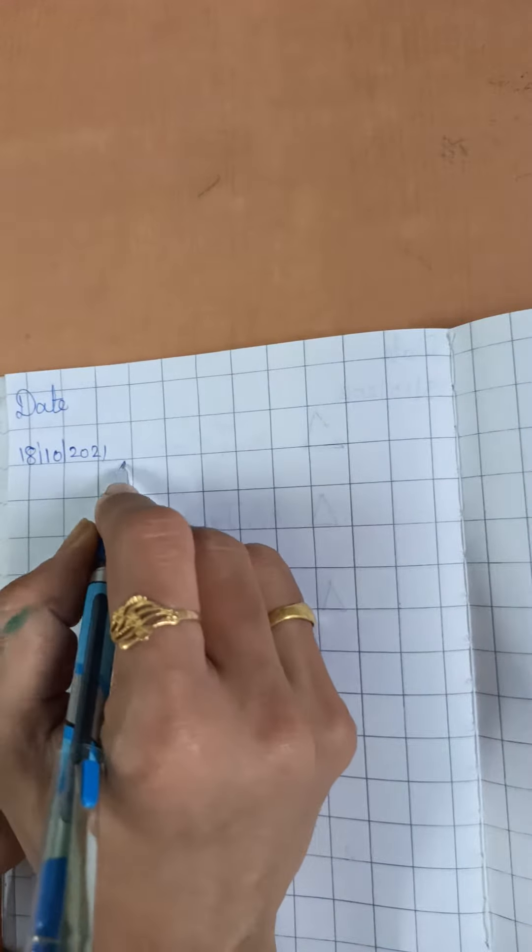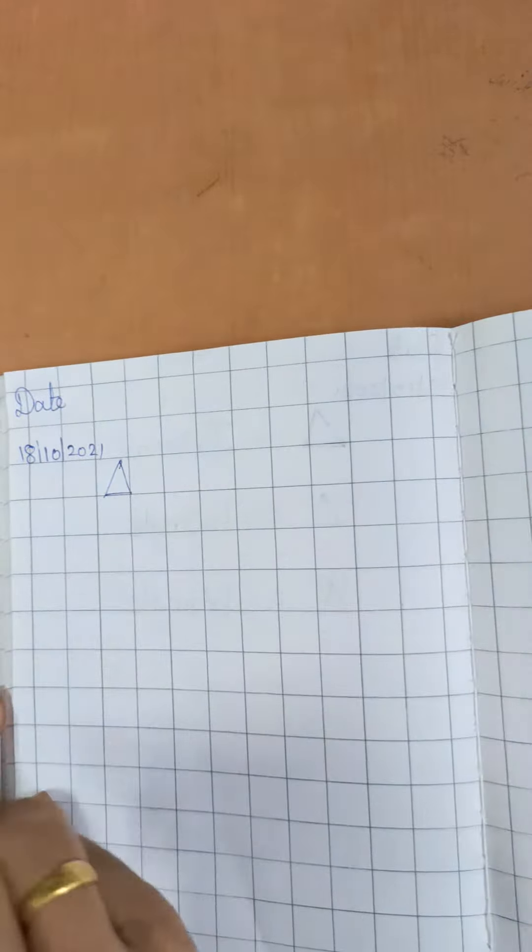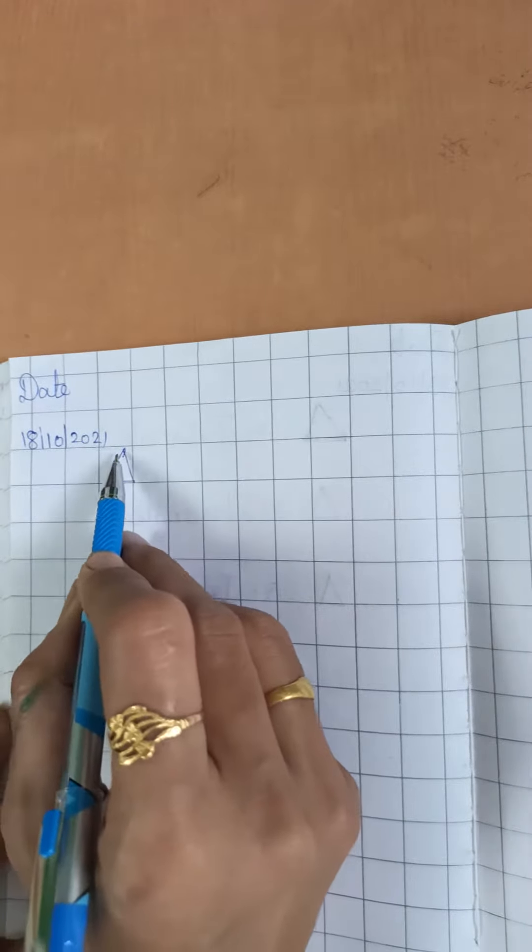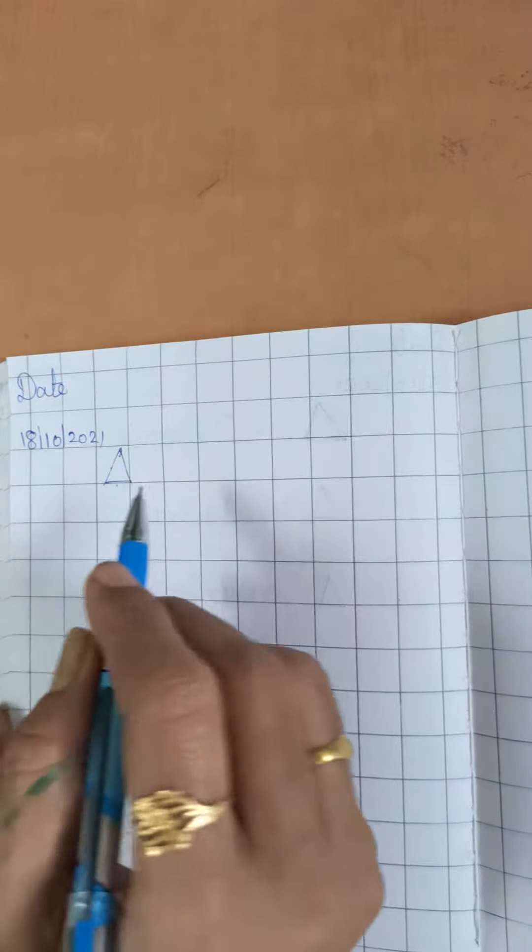But, triangle means 3 sides. Triangle has 3 sides, 1, 2, 3. Triangle shape aise hota hai.